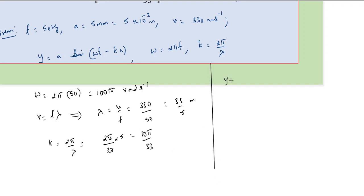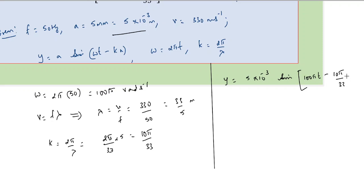Putting it all together, the wave equation is y = 5 × 10⁻³ sine(100πt - (10π/33)x) meters. This is the required wave equation.